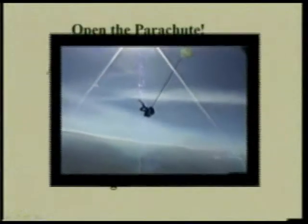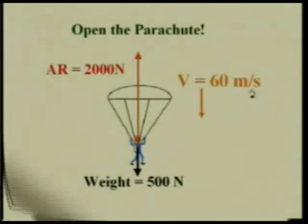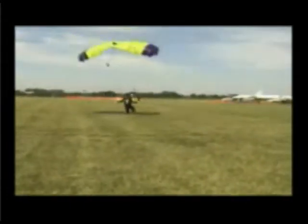This terminal velocity of 60 meters per second continues. When the parachute is opened, since the area is very large, the force due to air resistance becomes 2000 Newton, while the downward force remains 500 Newton. Within a second or couple of seconds, air resistance drops to 500 Newton, which balances the downward weight of 500 Newton. The velocity is greatly reduced to 2 meters per second — this is the new terminal velocity — and it continues all the way to the ground, so the skydiver lands safely.